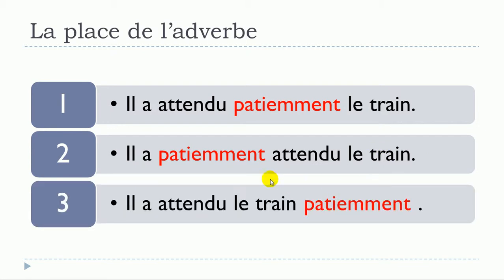There is also a third option. It would be possible to put it like this: il a attendu le train, and then you put your adverb at the end — patiemment. So: il a attendu le train patiemment. Let's see again the three options: first, il a attendu patiemment le train; second, il a patiemment attendu le train; and the last one, il a attendu le train patiemment.